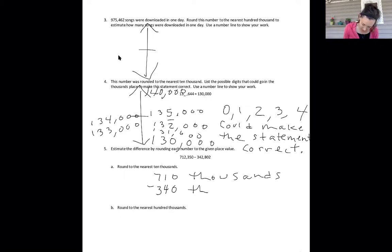So let's do the subtraction. Zero minus zero is zero. One ten thousand minus four ten thousands, can't do it. I have to borrow from the hundred thousands. I now break that down. I have eleven ten thousands minus four ten thousands, seven. And six hundred thousands minus three hundred thousands is three hundred thousands. We're still talking about thousands here. And I've estimated 370,000.